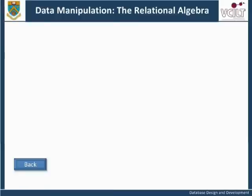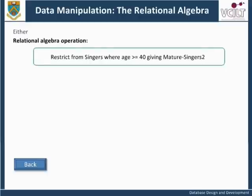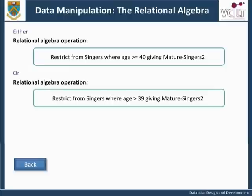If we wanted to include singers aged 40 and above, we could use either of the following operations, which would have the same effect. Either: Restrict from singers where age is greater than or equal to 40, giving mature singers. Or: Restrict from singers where age is greater than 39, giving mature singers. The result of either of these operations is shown here.